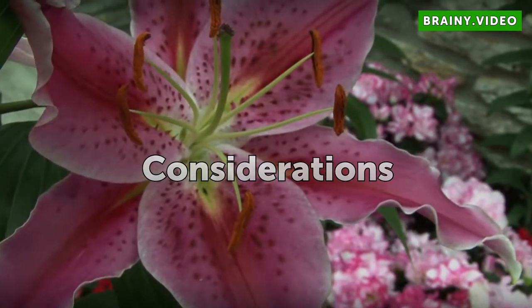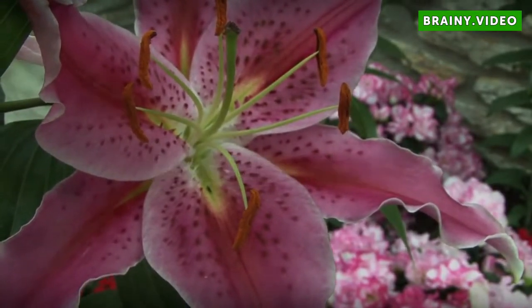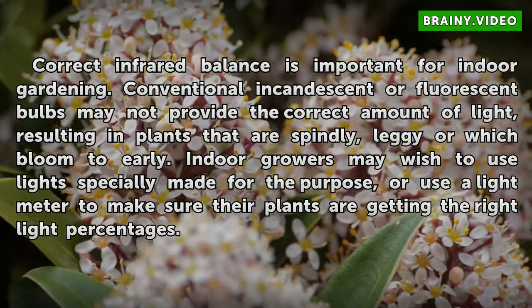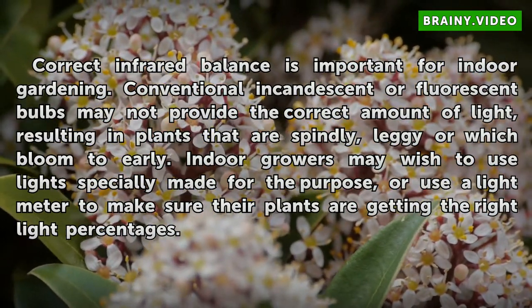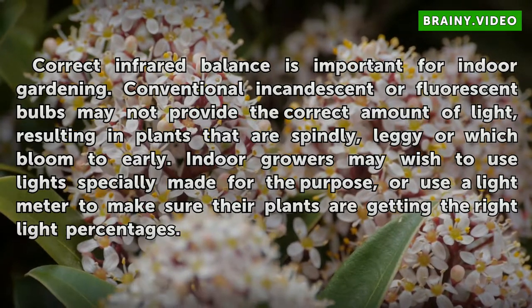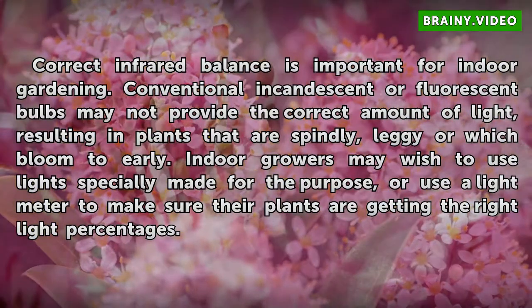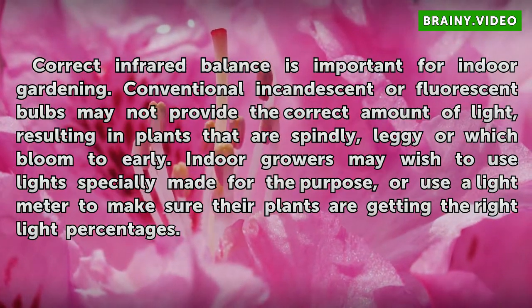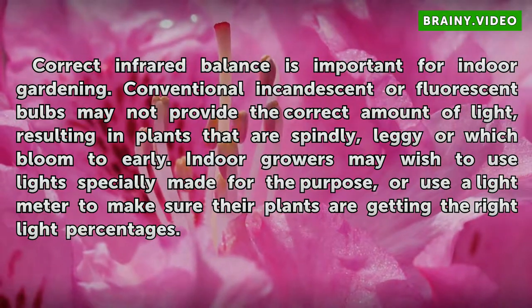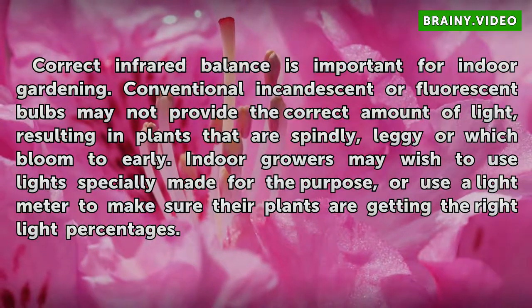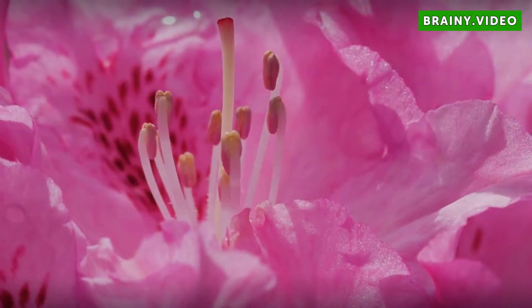Considerations: Correct infrared balance is important for indoor gardening. Conventional incandescent or fluorescent bulbs may not provide the correct amount of light, resulting in plants that are spindly, leggy, or which bloom too early. Indoor growers may wish to use lights specially made for the purpose, or use a light meter to make sure their plants are getting the right light percentages.